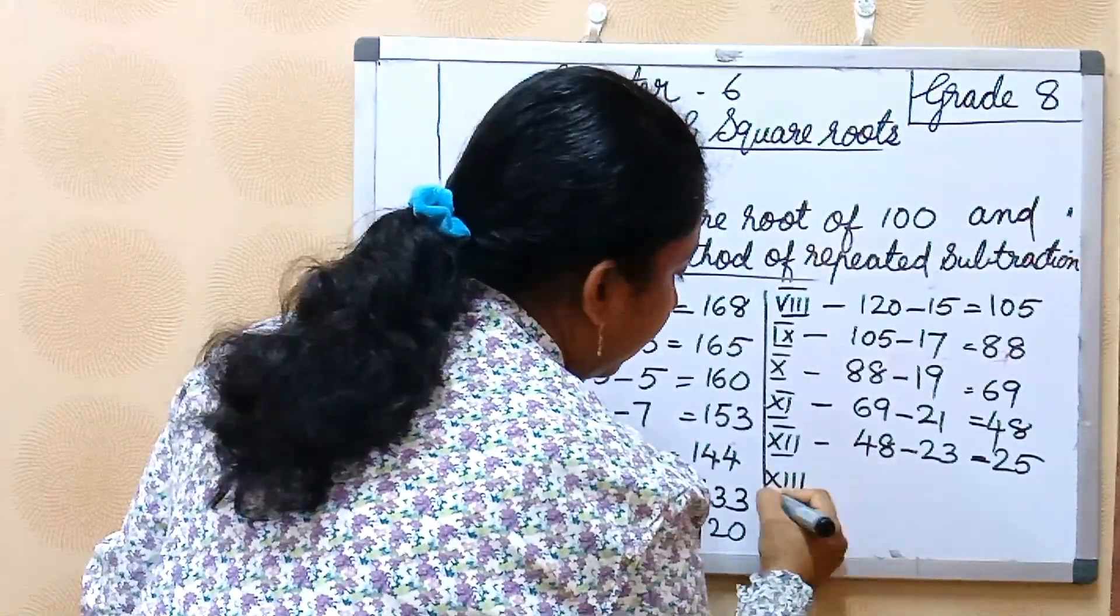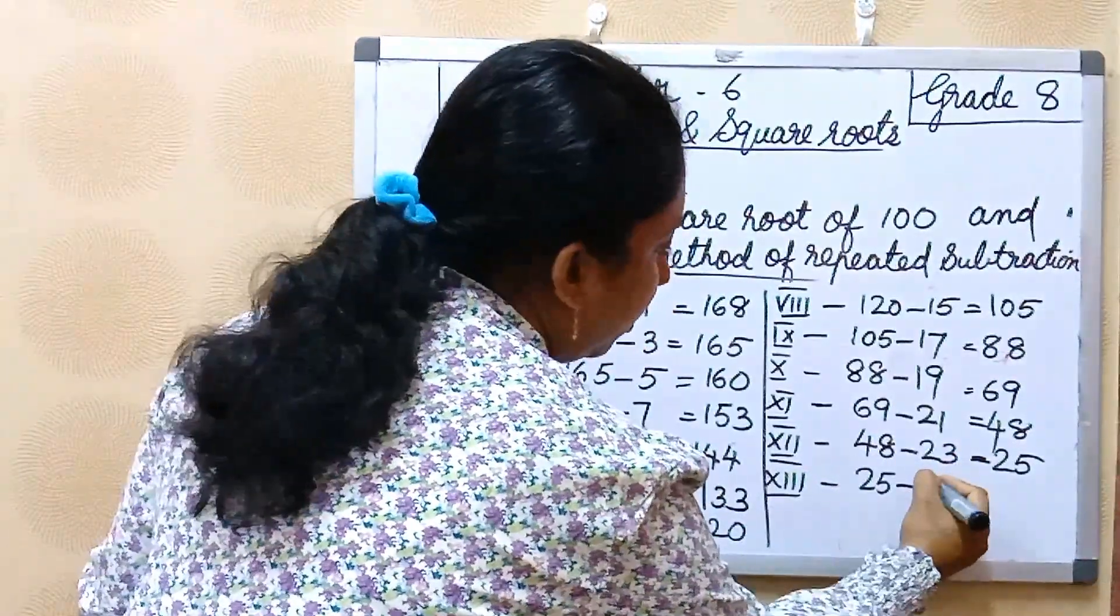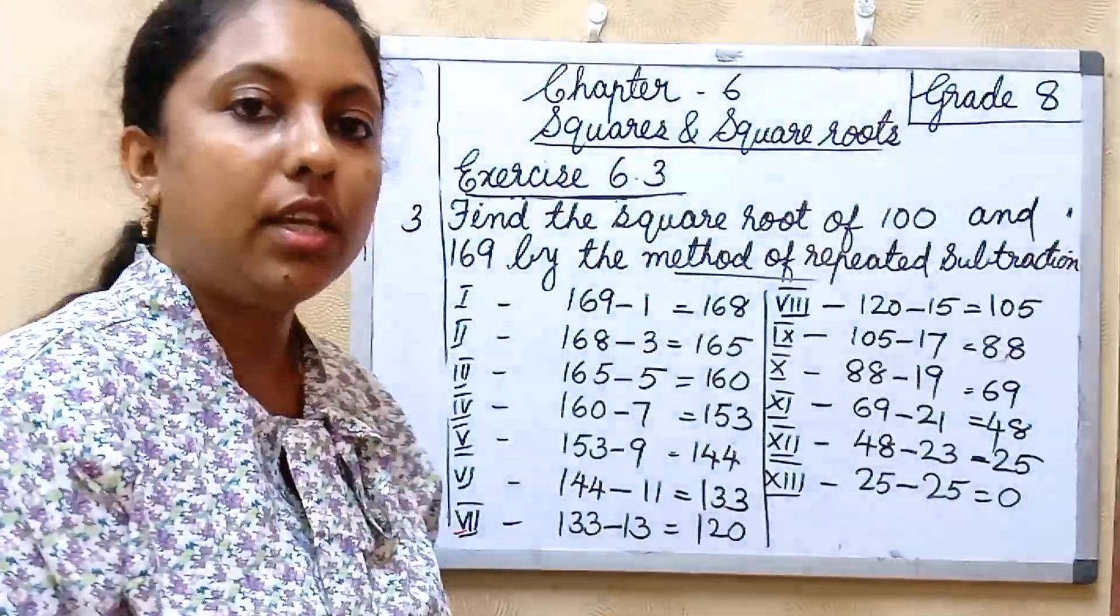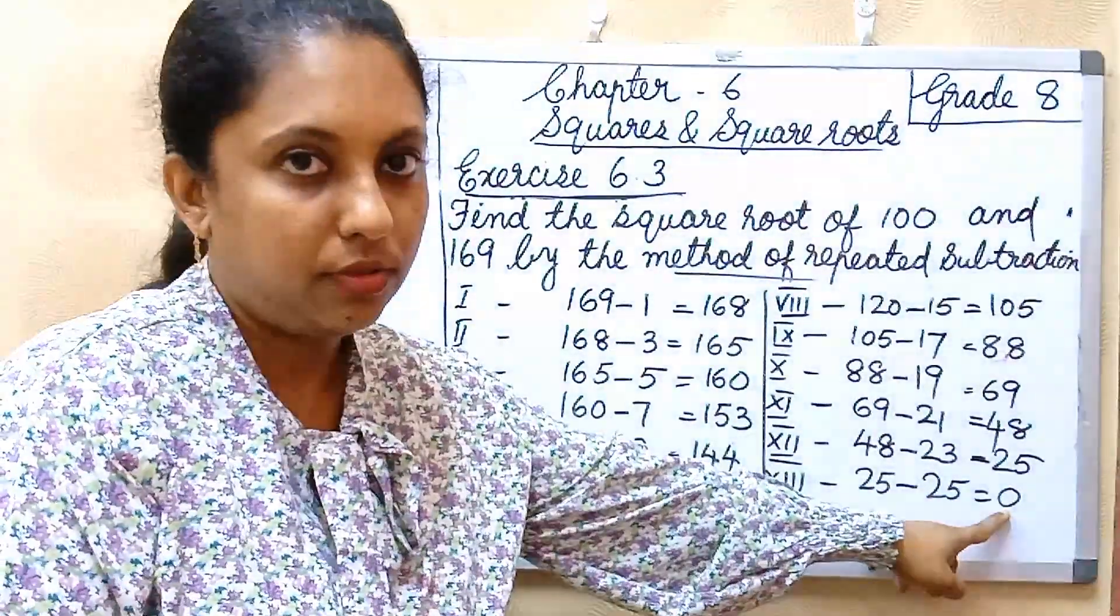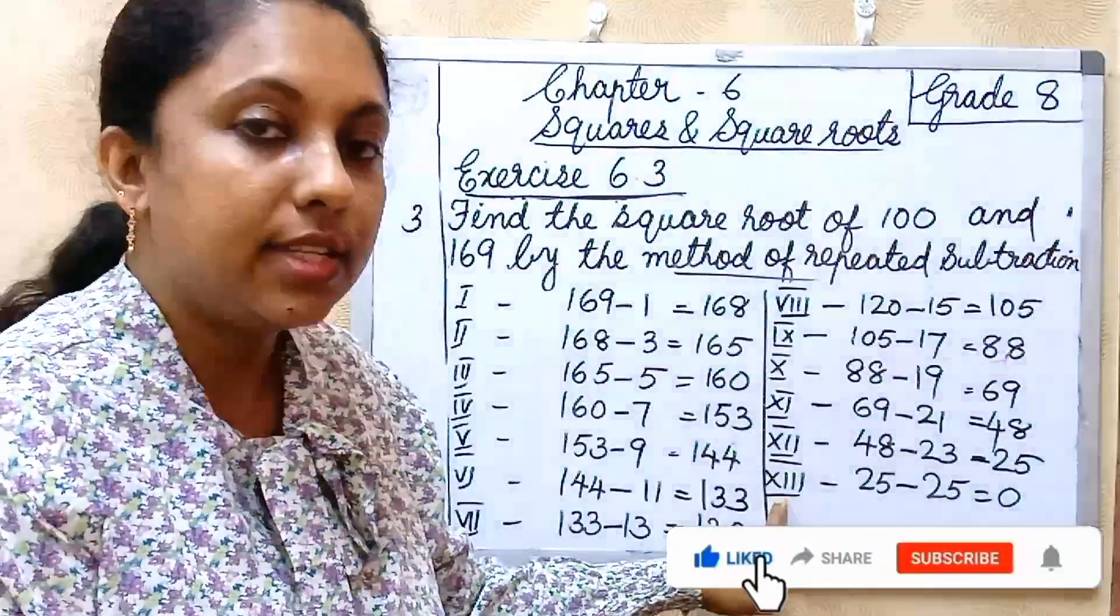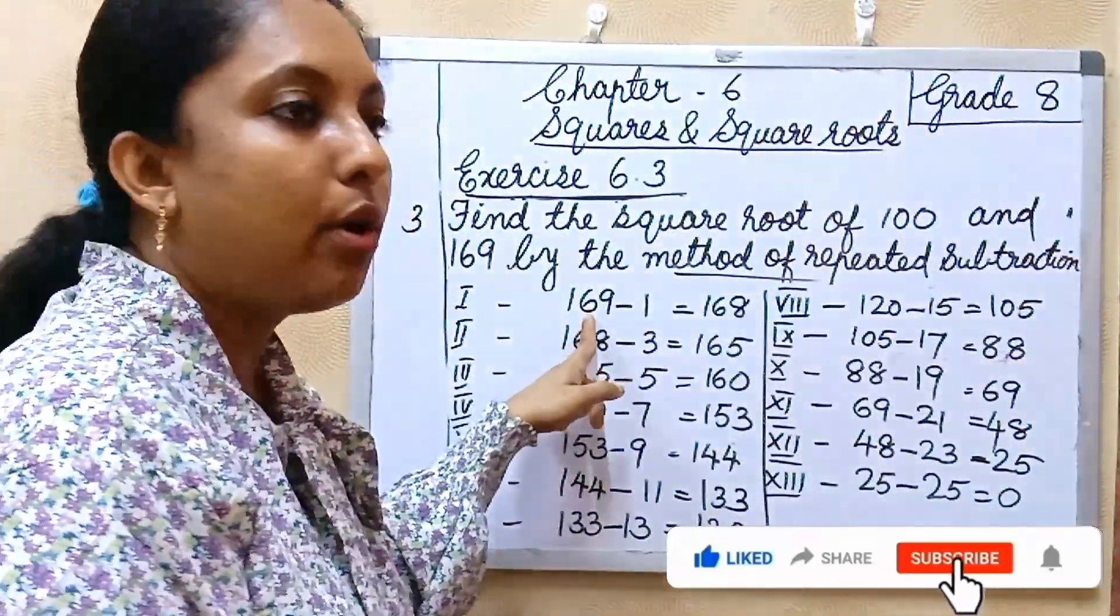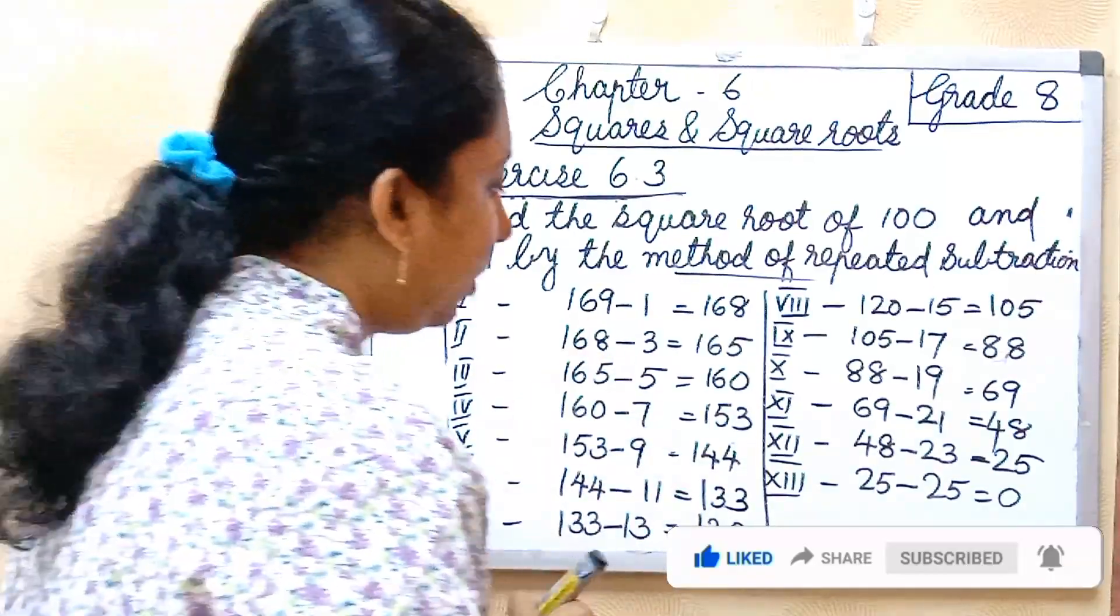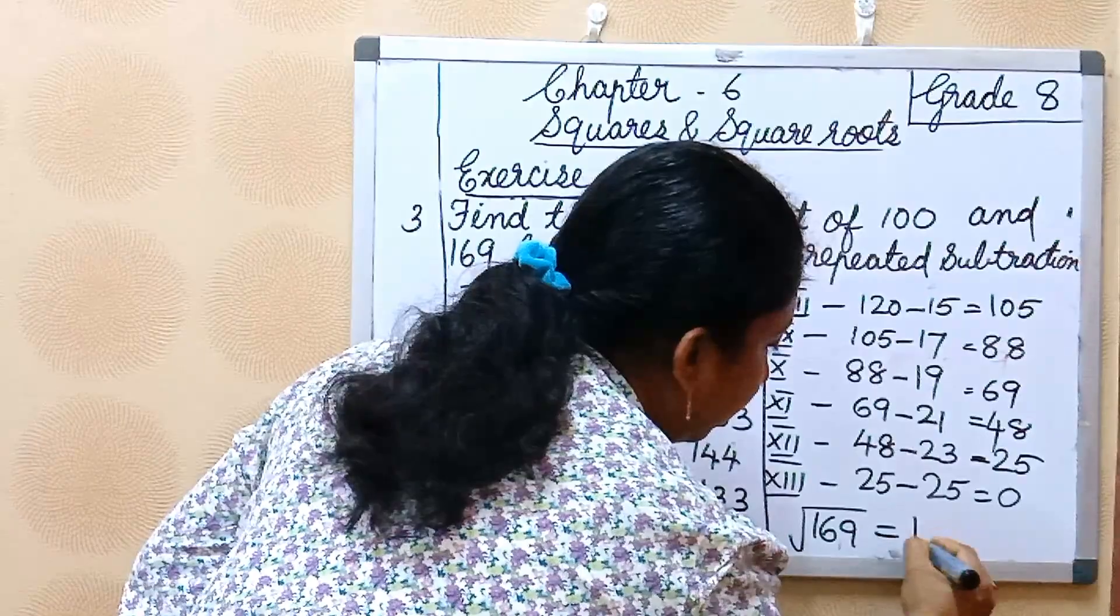Then 13th step, 25 minus next odd number is 25, so 25 minus 25 is equal to 0. So now we got 0, 13th step we got 0. So square root of 169 is 13. Square root of 169 is equal to 13. 13 into 13 is equal to 169.